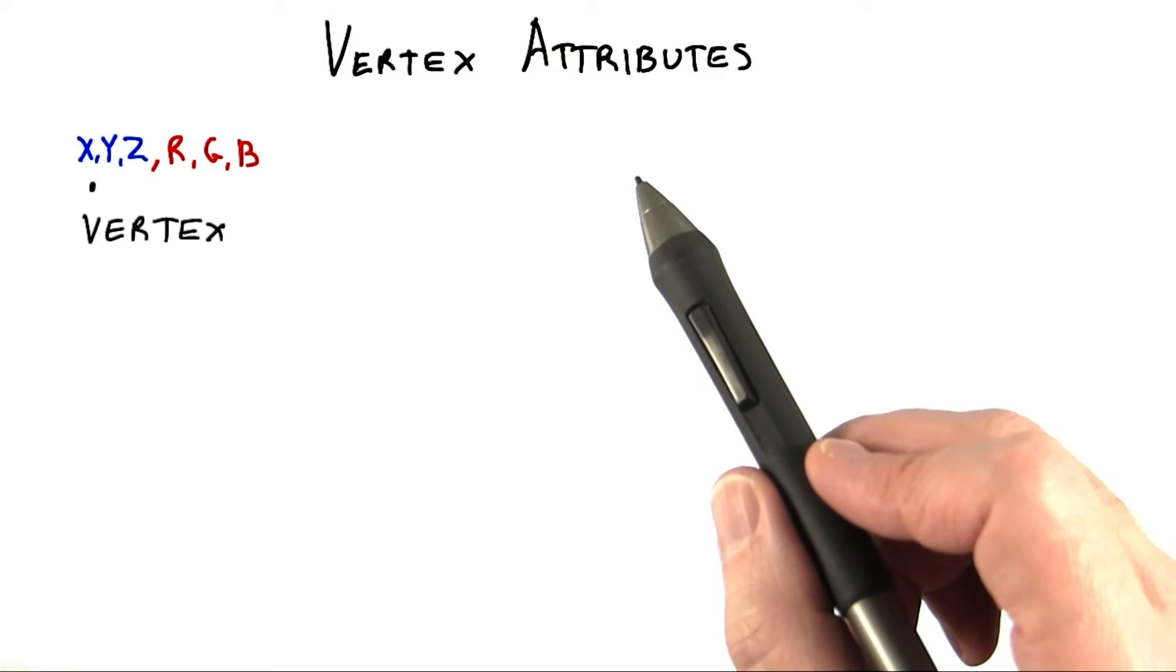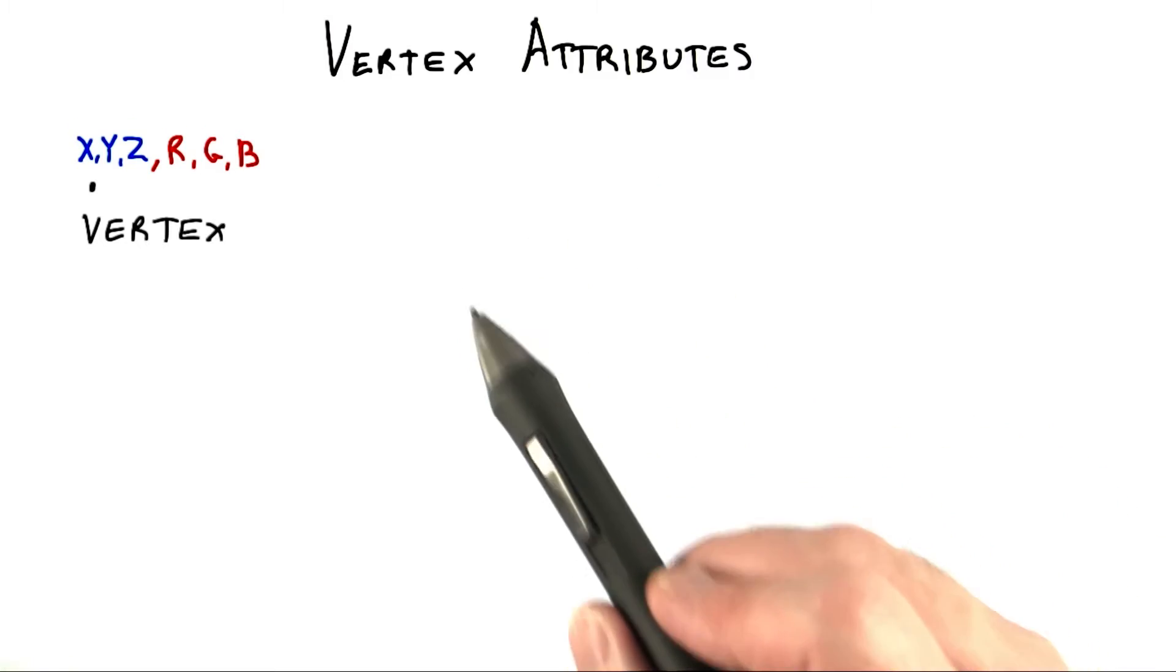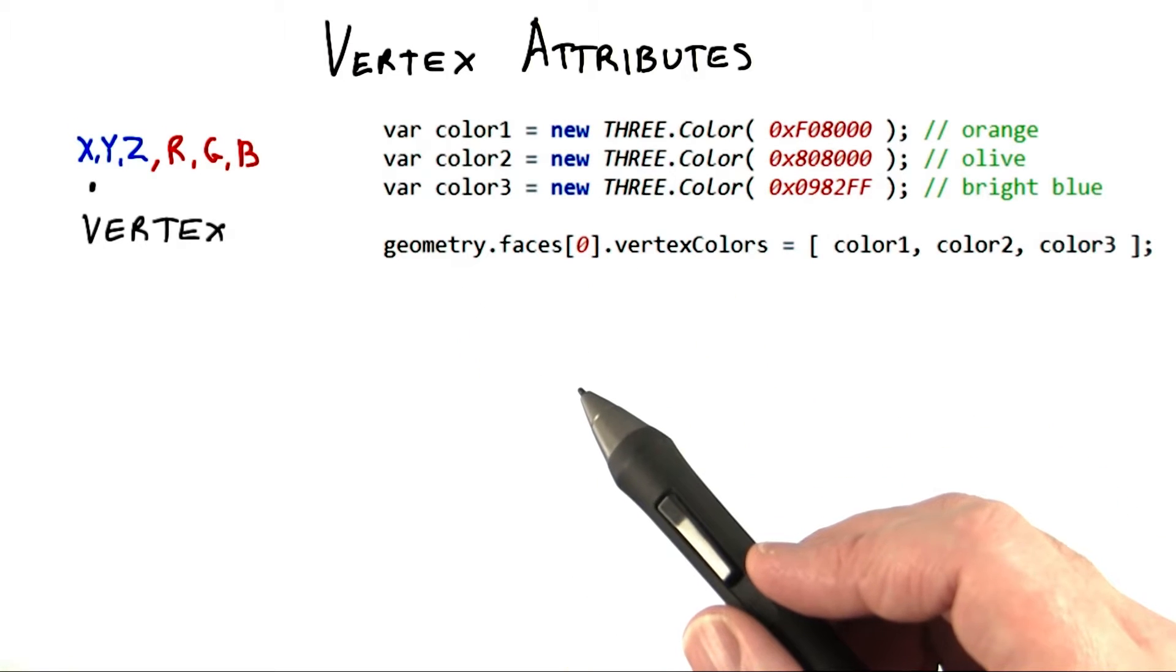To visualize a slice through the color cube, we'll attach a different color to each vertex. To start, you'll add a triangle to the scene.